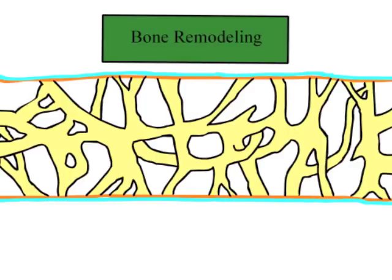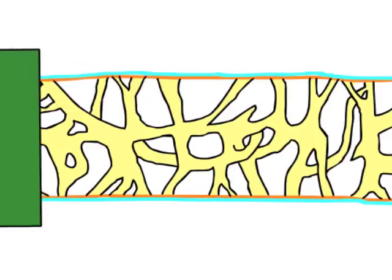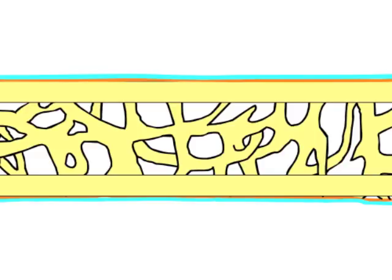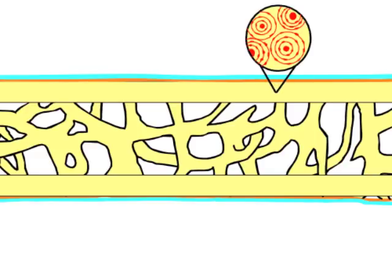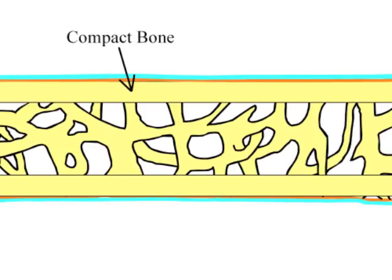Through the process of bone remodeling, the osteocytes at the edge of spongy bone can reorganize themselves into tightly packed bundles known as osteons. These osteons are the foundational building blocks of compact bone, which is then formed on the outside edges of the spongy bone.